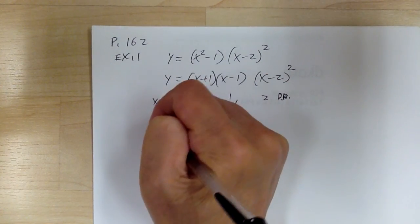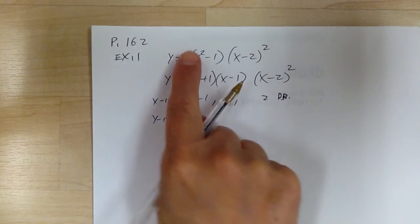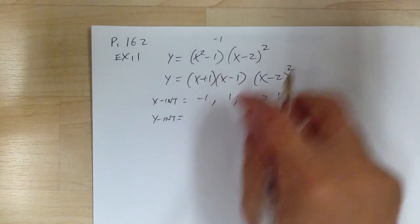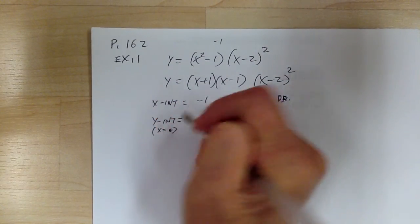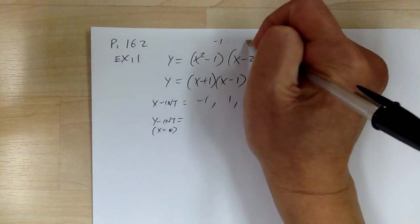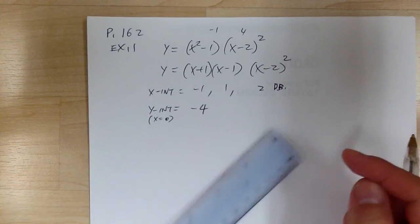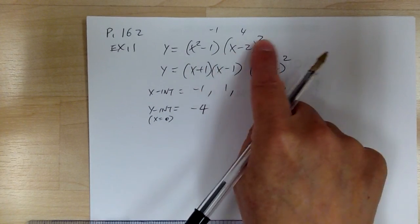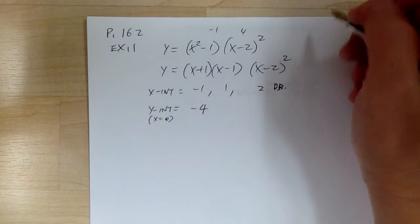The y-intercept is when x equals 0. Setting x = 0: (x² - 1) gives -1, and (x - 2)² gives (-2)² = positive 4. So -1 times 4 gives you -4. The y-intercept is -4. And again, this is the fourth power — x squared times x squared — so it's a 4th degree graph shaped like a W.